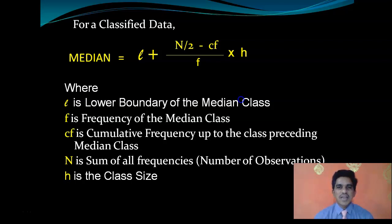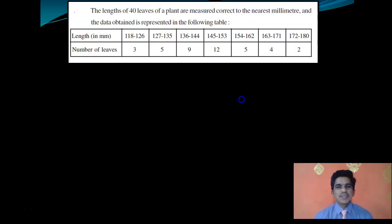We will take an example. This is actually a textbook example. The lengths of 40 leaves of a plant are measured, corrected to nearest millimeter, and the data obtained is represented in the following table.